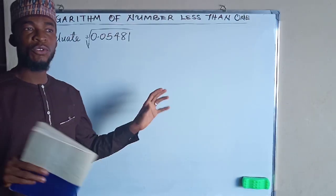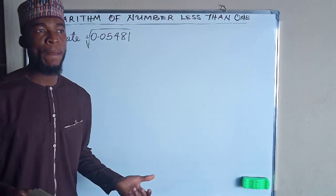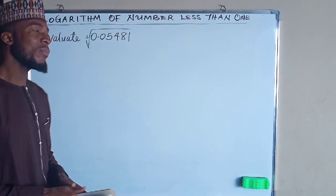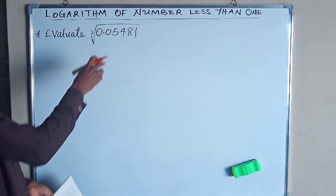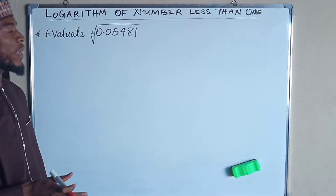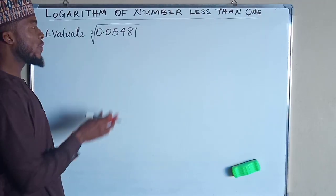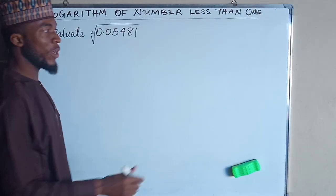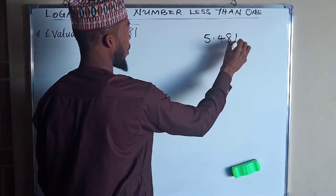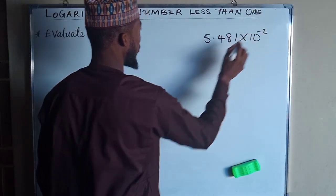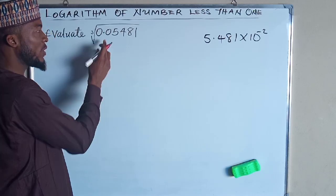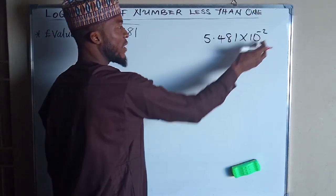This is a question which you can just use your calculator and evaluate, but we are going to use logarithm in order to simplify it. What you do when given this type of question is try as much as you can to transform this number into standard form. So the standard form of 0.05481 is 5.481 times 10 raised to the power of negative 2. We move the decimal point two places, and that's why we have a negative 2.